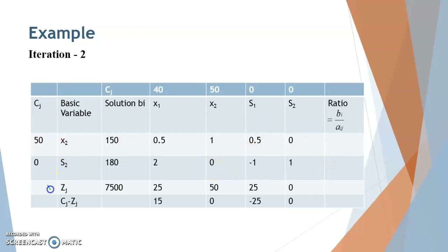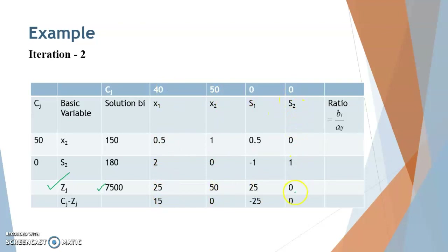After completing the updated tableau, calculate the Zj value, which is the sum of the products of each column element with the corresponding Cj of the basic variables. Then calculate Cj minus Zj: 40 minus 25 gives 15, 50 minus 50 gives 0, and the slack variable columns give minus 25 and 0.